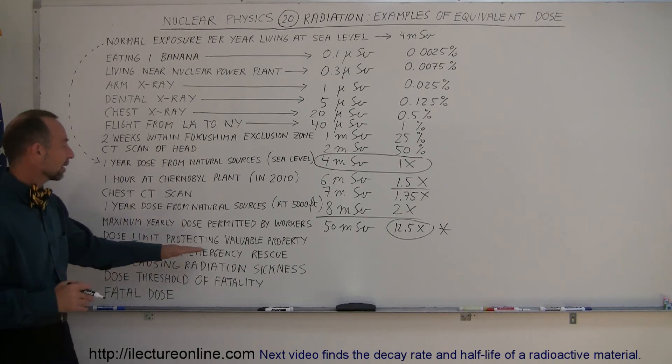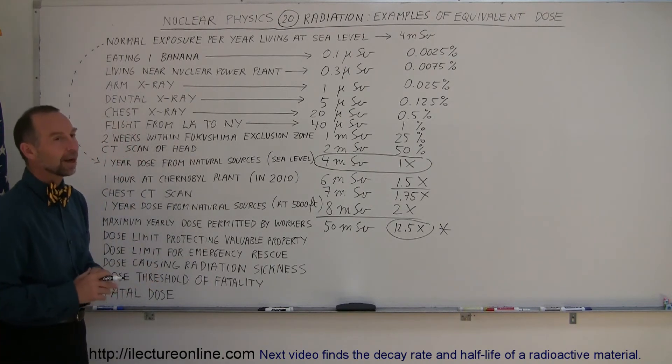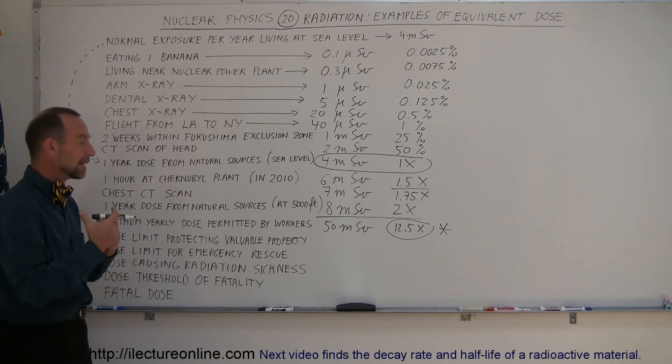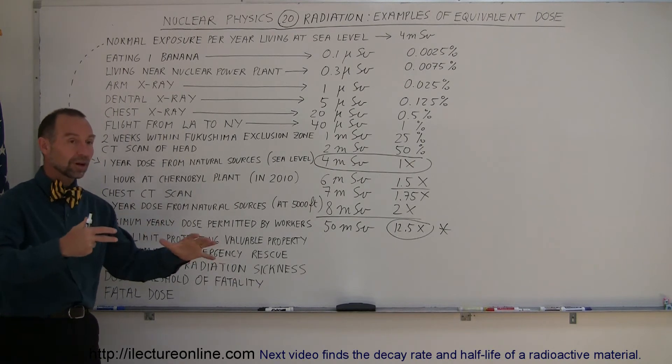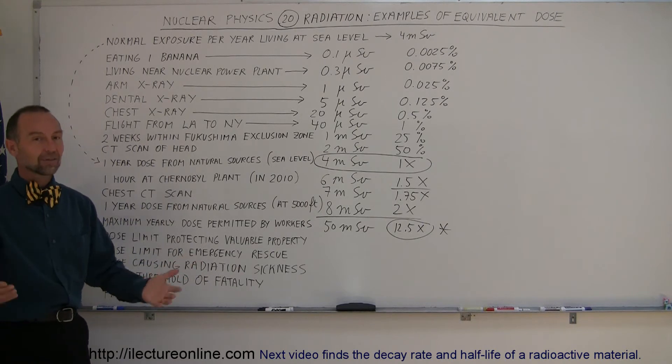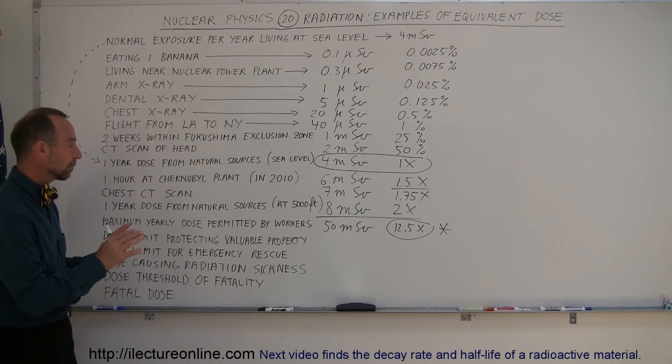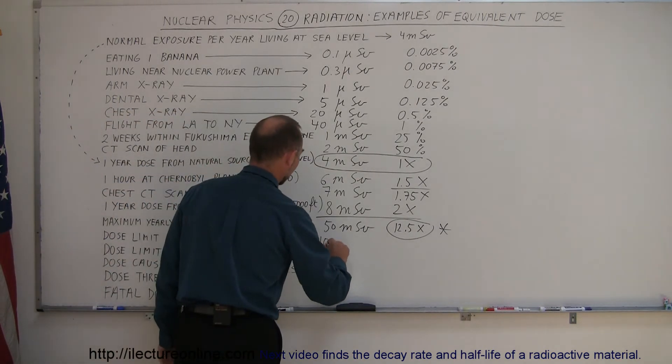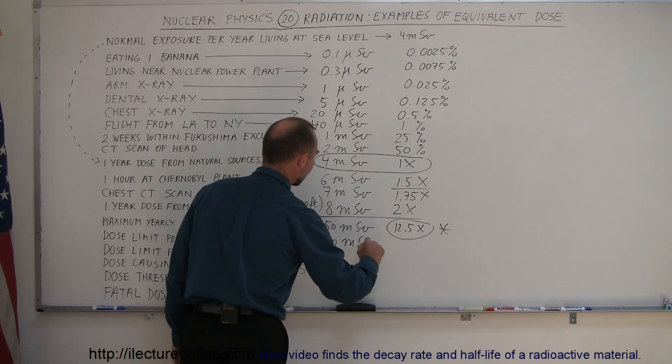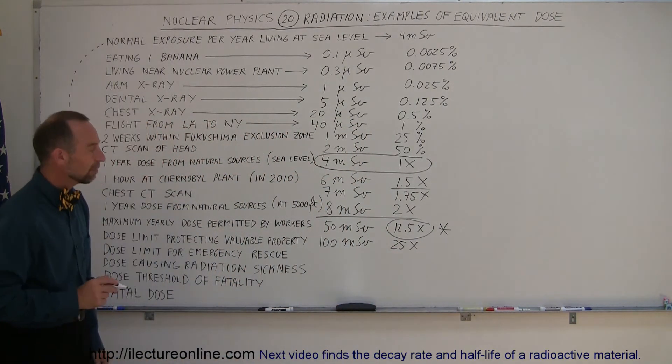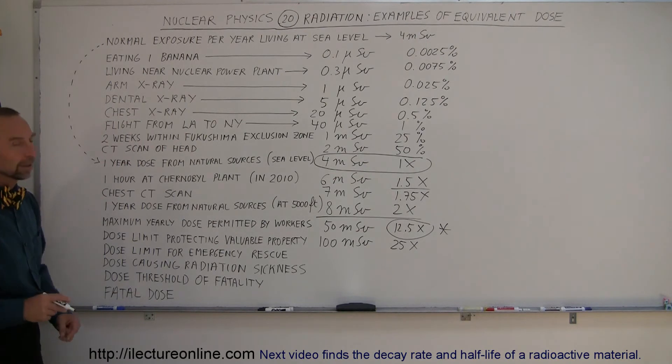The dose limit protecting valuable property. Let's say that the nuclear power plant is about to blow. There is some radiation leak. The radiation is quite high. Are you allowed to go in there as a worker and shut things down and try to safeguard the plant because the plant is a very valuable property? The city or the towns nearby the plant are a very valuable property. You want to protect that. Then, the government allows you to receive a higher dose of radiation, as much as 100 millisieverts, which would be 25 times the amount that people normally receive living at sea level.